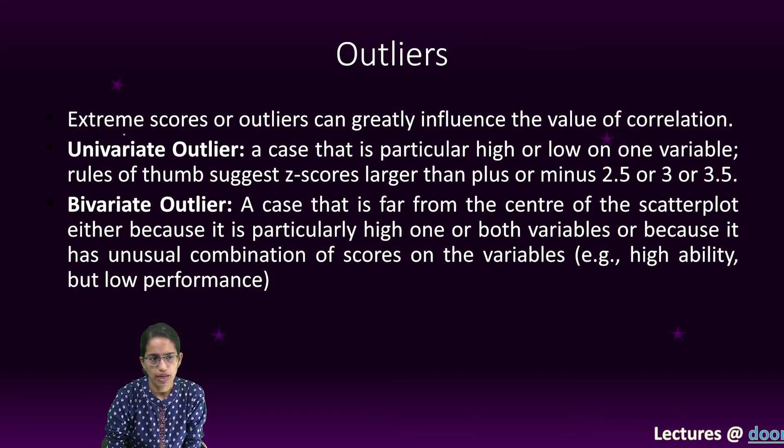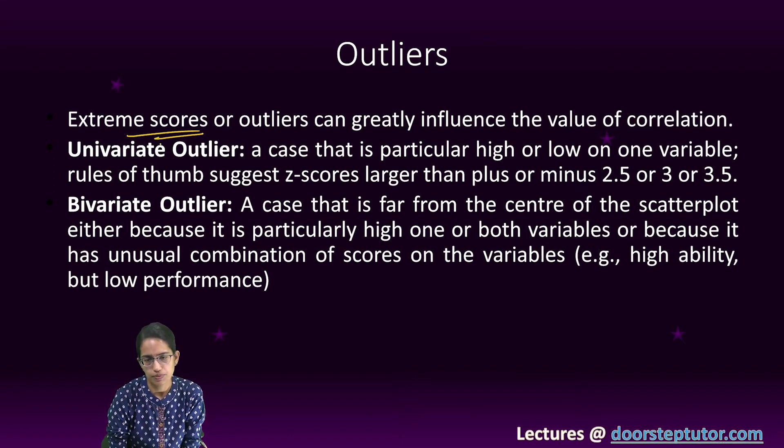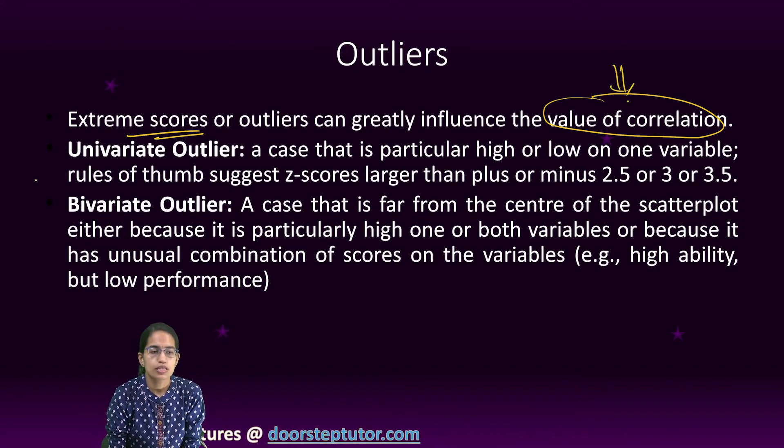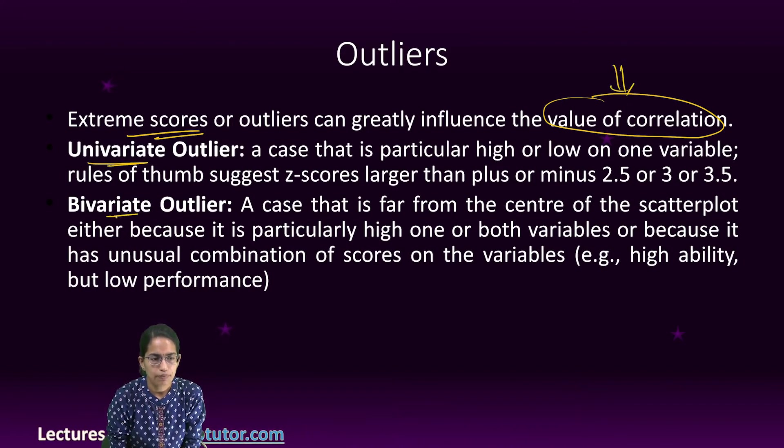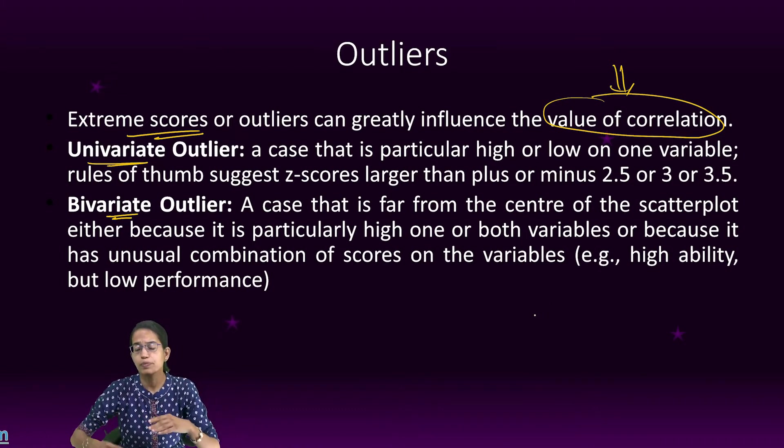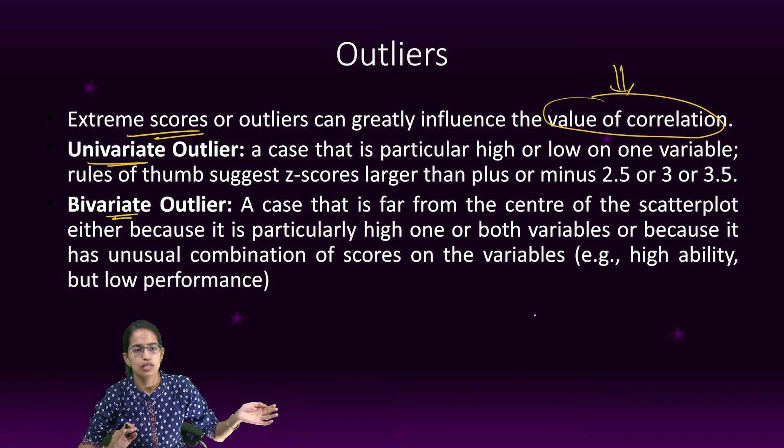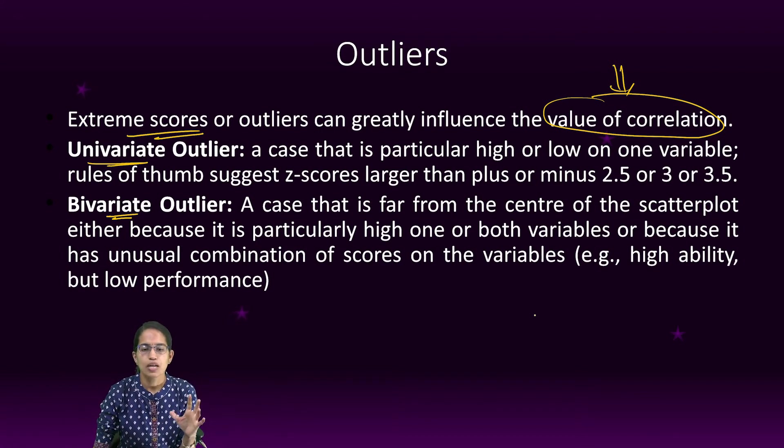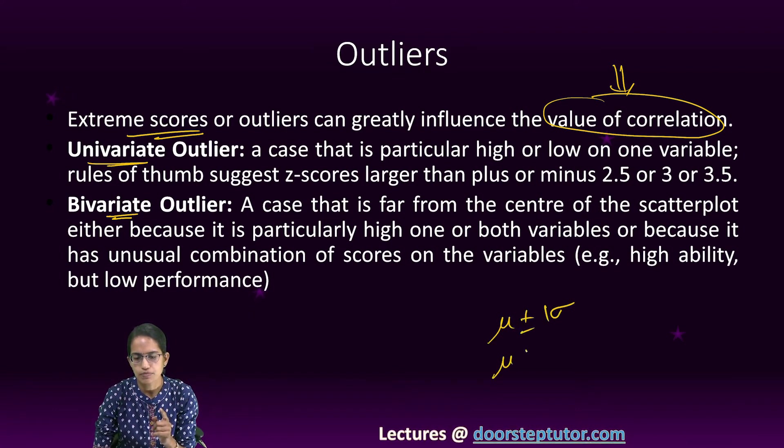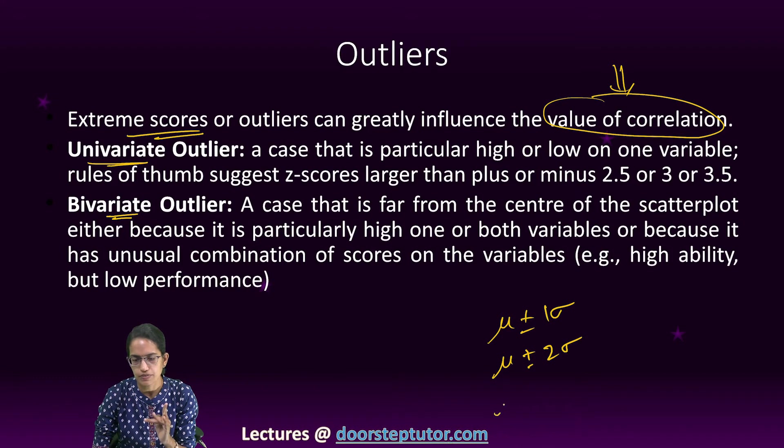Any extreme score which is present will influence the value of correlation. These outliers could be univariate or bivariate. Univariate means when there is just one variable, it could be exceptionally high or exceptionally low. When we talk about the normal distribution curve, we say mean plus minus one standard deviation, mean plus minus two standard deviations, and mean plus minus three standard deviations.